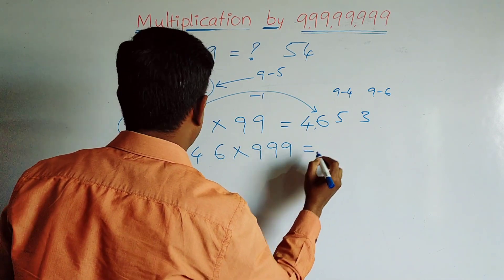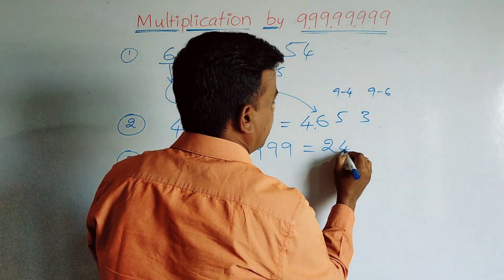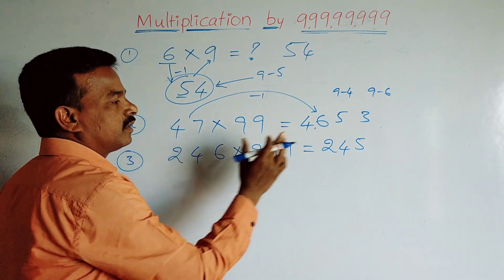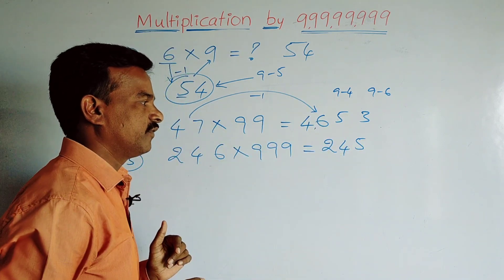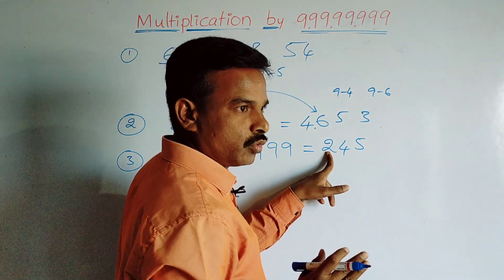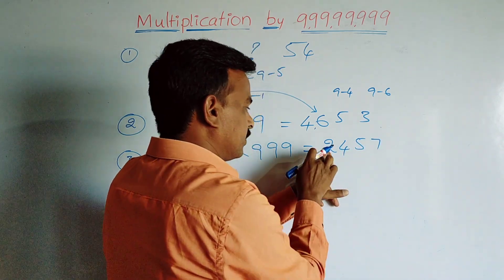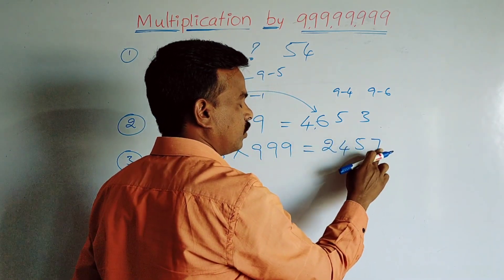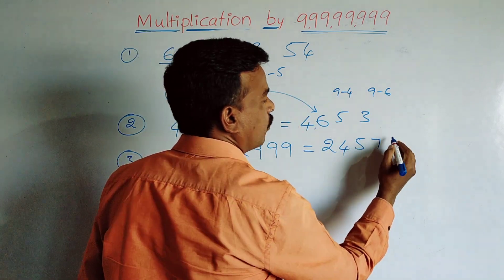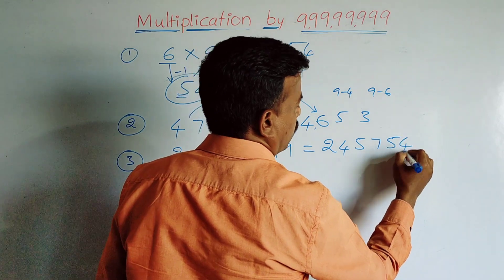One more example: 246 × 999. Subtract 1 from 246: 246 minus 1 equals 245. Then subtract each digit from 9: 9 minus 2 equals 7, 9 minus 4 equals 5, 9 minus 5 equals 4. So the answer is 245754.